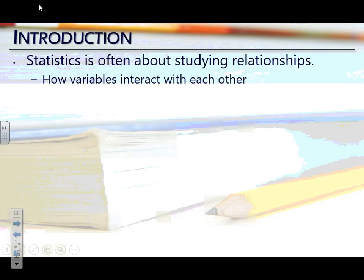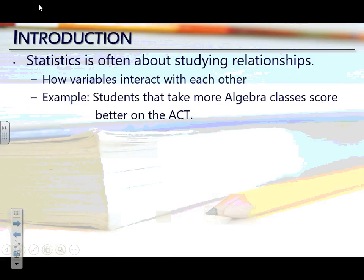For instance, you can study things like the number of algebra classes a kid takes and their score on the ACT. They found that in general, students who take more algebra, take more math, score better on the ACT test. So basically what we're doing is taking variables and comparing them to see if there are any patterns or trends that appear between the two.